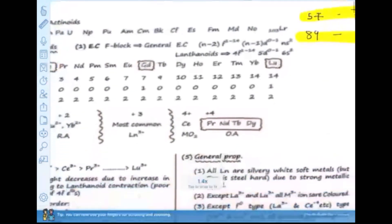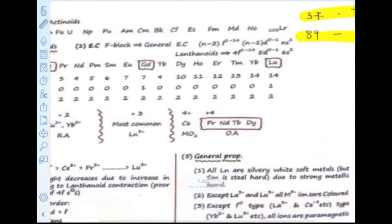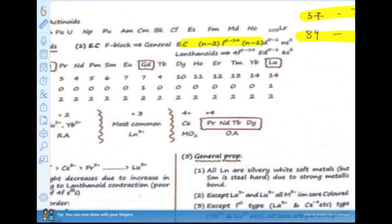Before starting with the lanthanoid series, we will first cover the general formula, because sometimes a direct question is asked about what the general formula is. The general formula is: (n-2) F 1 to 14, (n-1) D 0 to 1, and n S 2. This is the general formula.